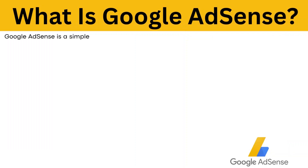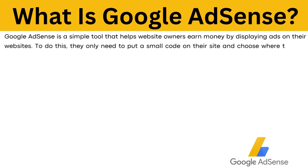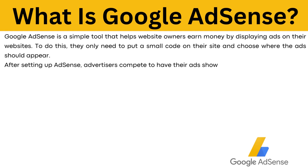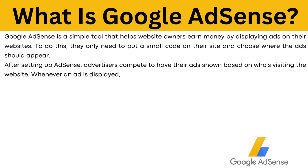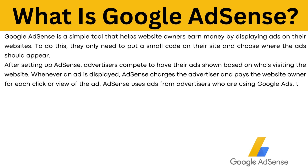What is Google AdSense? Google AdSense is a simple tool that helps website owners earn money by displaying ads on their websites. To do this, they only need to put a small code on their site and choose where the ads should appear. After setting up AdSense, advertisers compete to have their ads shown based on who's visiting the website. Whenever an ad is displayed, AdSense charges the advertisers and pays the website owner for each click or view of the ad. AdSense uses ads from advertisers who are using Google Ads, the Google Display Network, or other Google services.